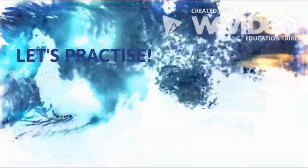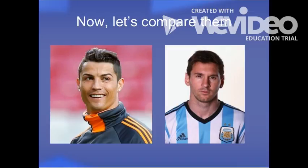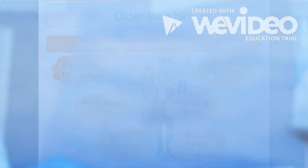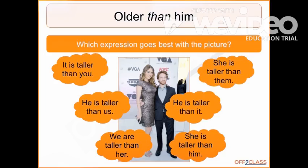Let's practice. Now let's compare them. Which expression goes best in the picture? It is taller than you. He is taller than us. We are taller than her. He is taller than it. She is taller than him. She is taller than them. Now the correct answer is: She is taller than him.